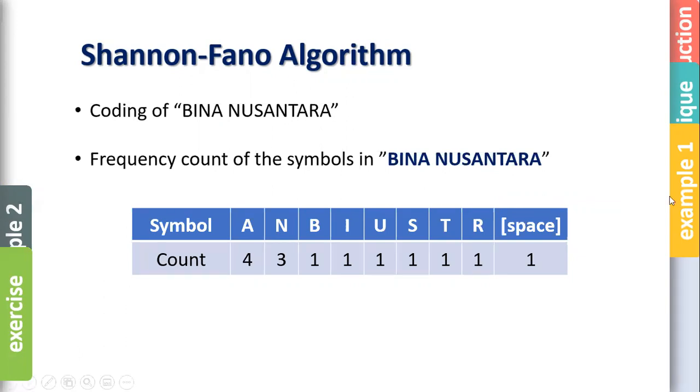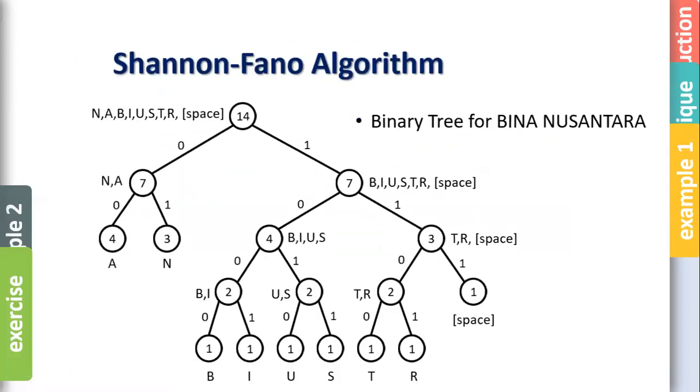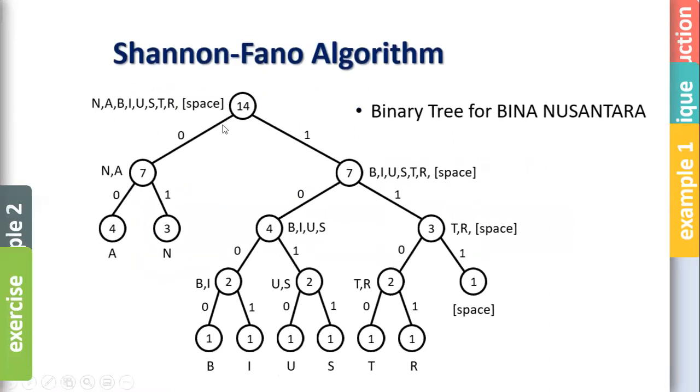Step two, you need to divide. So if you count, this all is 14. 14 characters in BINA NUSANTARA including space. If you divide by 2 is 7. So you separate A with N with the rest of other characters. So then you create a binary tree like this. So total character is 14. You separate N and A over here, 7. Because N is 3, A is 4, it's 7. The rest also 7. B, I, U, S, T, R, and space.